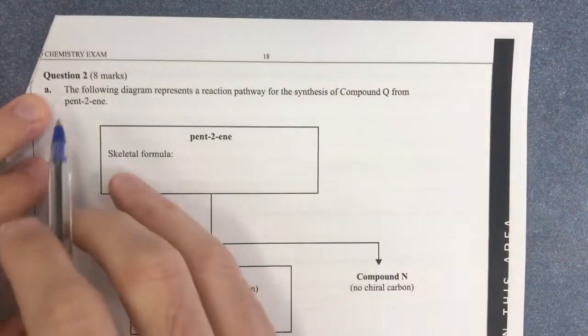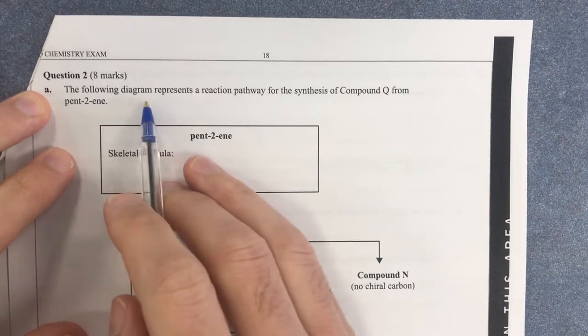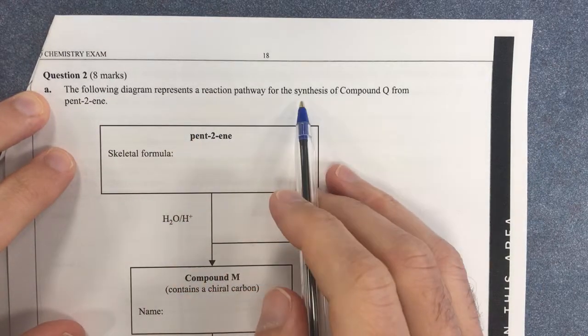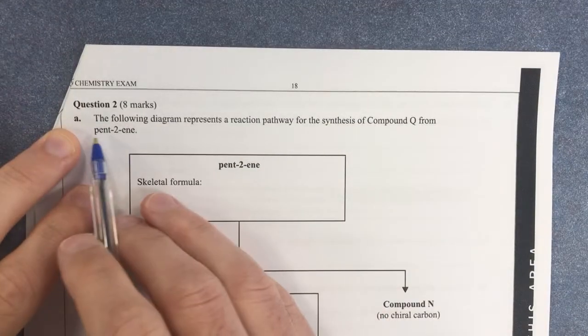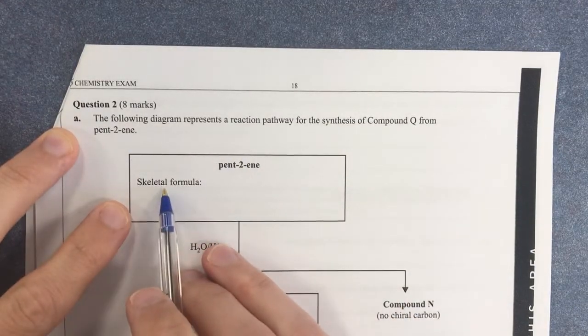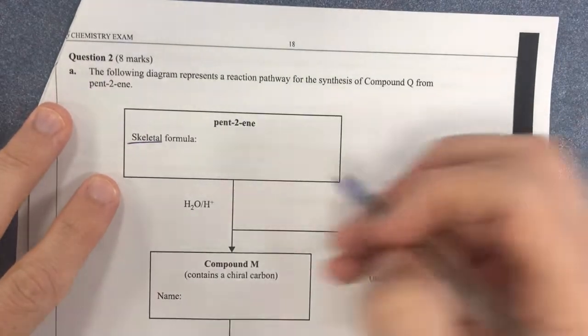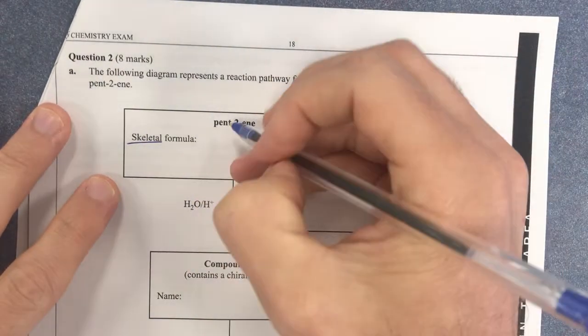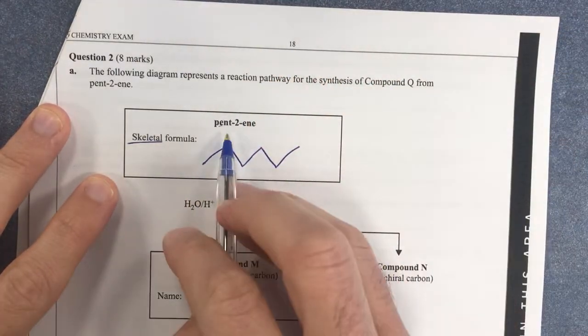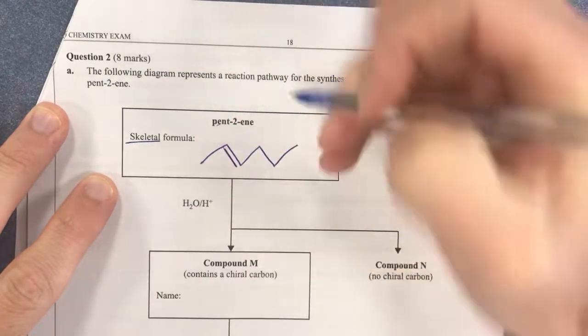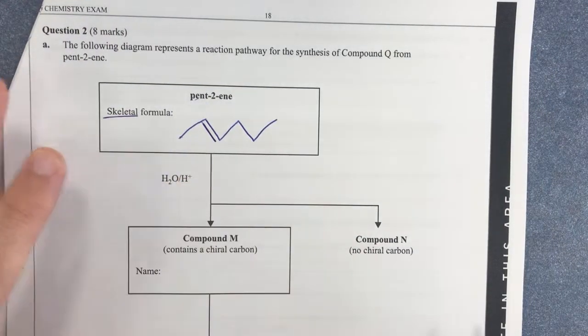Okay, question 2 for the 2019 chemistry exam. The following diagram represents a reaction pathway for the synthesis of compound Q down here from pent-2-ene. We first of all want the skeletal structure for pent-2-ene. Skeletal structure, that is just showing you lines. So pent is 1, 2, 3, 4, 5, and 2 means it comes here. That's where the double bond is. So therefore, that's my skeletal structure for pent-2-ene.